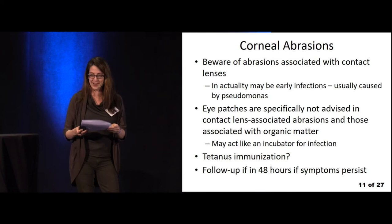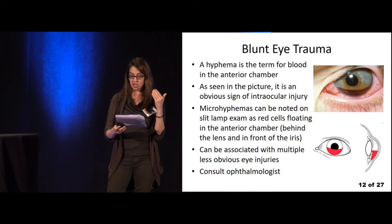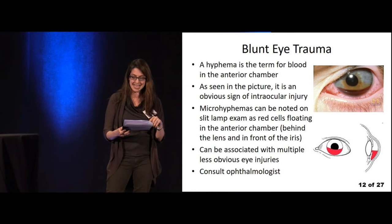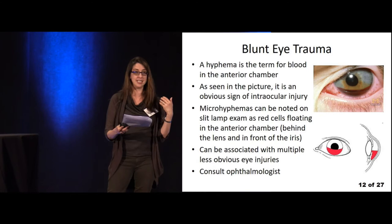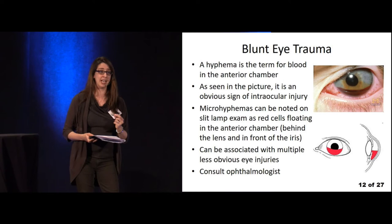For blunt eye injury, make sure to take a really good look and assess for hyphema — you can see it in the picture here. A hyphema is blood in the anterior chamber sitting behind the lens and in front of the iris. Also look for micro hyphemas using a slit lamp, as these can indicate an underlying injury requiring further evaluation. Consult ophthalmology for these patients.